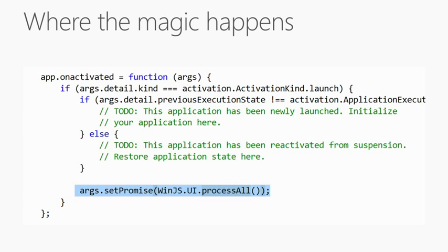How does this work? In the app.onactivated routine there's this line — WinJS.UI.processAll — and that crawls through all of the HTML in your application, finds all of those data attributes on those divs, and creates the control. It injects JavaScript, adds all the handlers. These controls are just CSS and JavaScript — they're nothing special, they're not system-level controls. The beauty of it is they look like system-level controls because we made them with identical animations and movements to C++ controls in XAML.